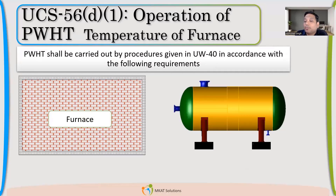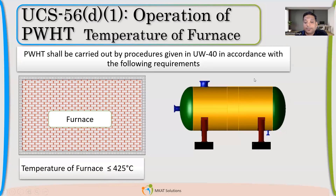So how can you do that heat treatment? You can do it in two goes — once you put the front side, and then the second side. Now, the first requirement: your furnace temperature shall be lower than 425°C when you insert your vessel. It's not practical to insert a vessel when the temperature is high, but the code provides this guideline to avoid too much thermal shock for the vessel.